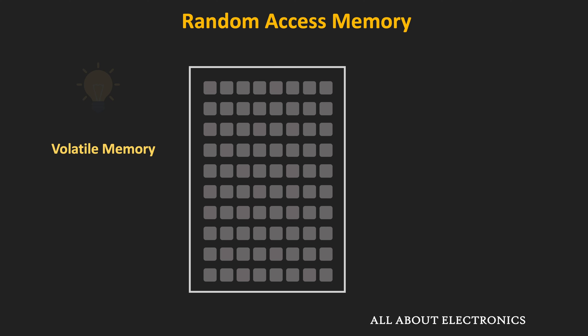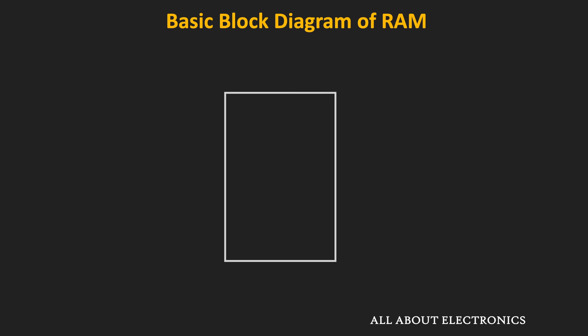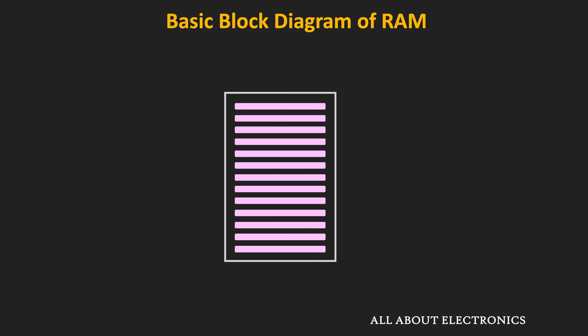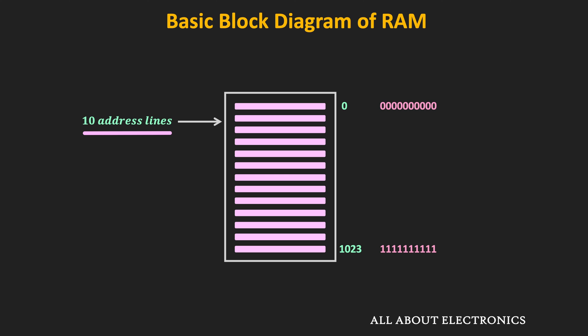Now let us see the basic block diagram of the RAM. Any random access memory consists of a specific number of words. Each word in the RAM is assigned a specific address. For example, if one RAM consists of 1024 words, the address of the first word in decimal is 0, and the address of the last word is 1023. In binary, the first word address is all 10 zeros and the last is all 10 ones. To access all these words, we require 10 address lines. This 10-bit address on the address line tells us what location in the RAM we want to access.